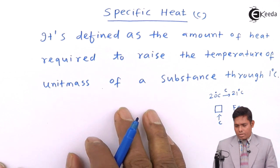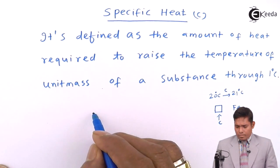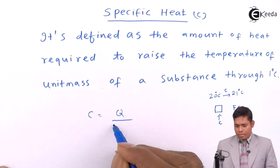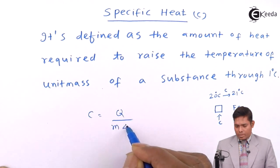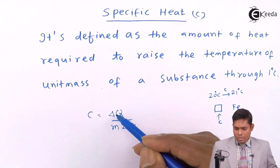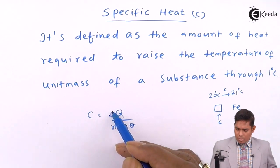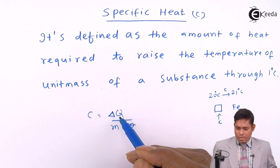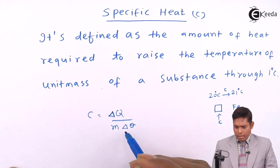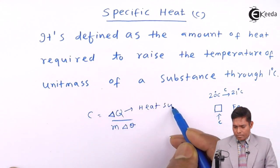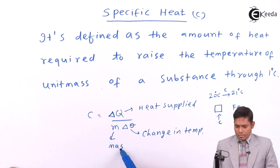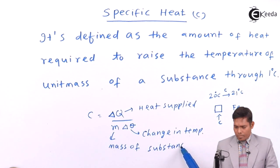The expression for specific heat: specific heat C is the heat supplied per unit mass per delta theta. So the formula is C equals delta Q divided by m times delta theta, where delta Q is the heat supplied, delta theta is the change in temperature, and m is the mass of the substance.